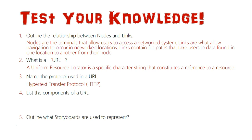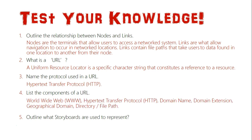Question four: list the components of a URL. They are the World Wide Web, which is the 'www' that comes first to indicate that something's on the internet. Then it's the hypertext transfer protocol, HTTP, and then usually we get a dot, slash, and then we get the domain name.